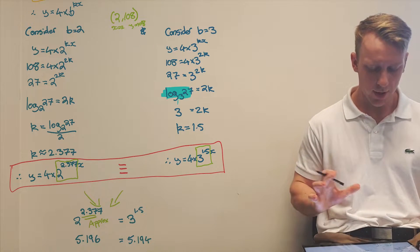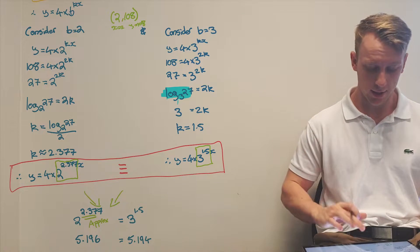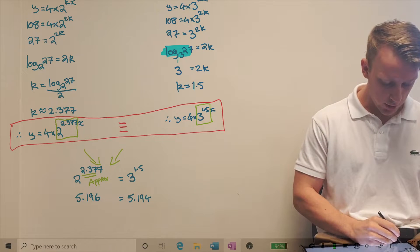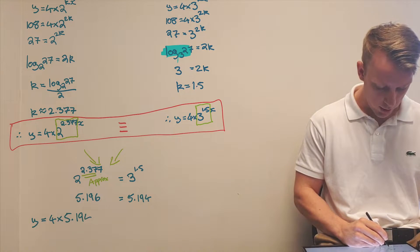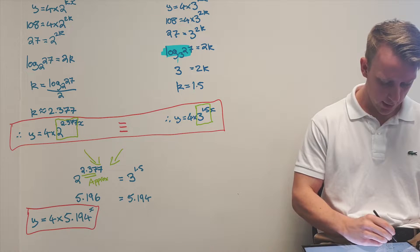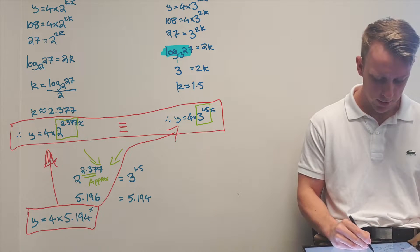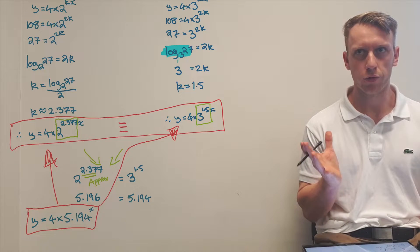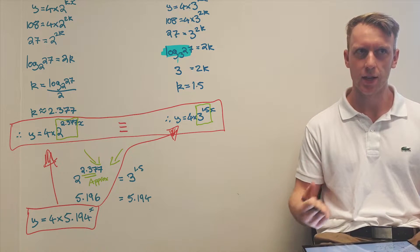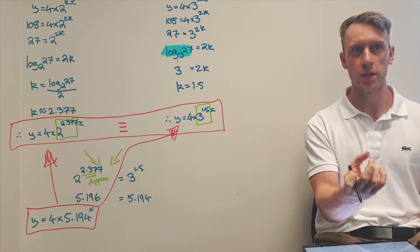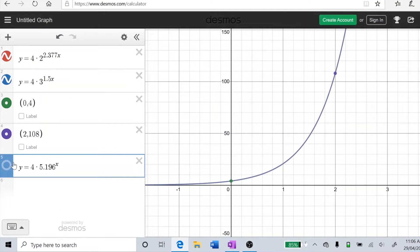Both functions are actually the same as y equals 4 times 5.194 to the power of x. This is where exponential functions get a little weird: you can choose different base numbers and the power fixes up the algebra. When we evaluated 2 to the power of k and 3 to the power of k, we get a base of approximately 5.196, which overlaps both lines and passes through both points.